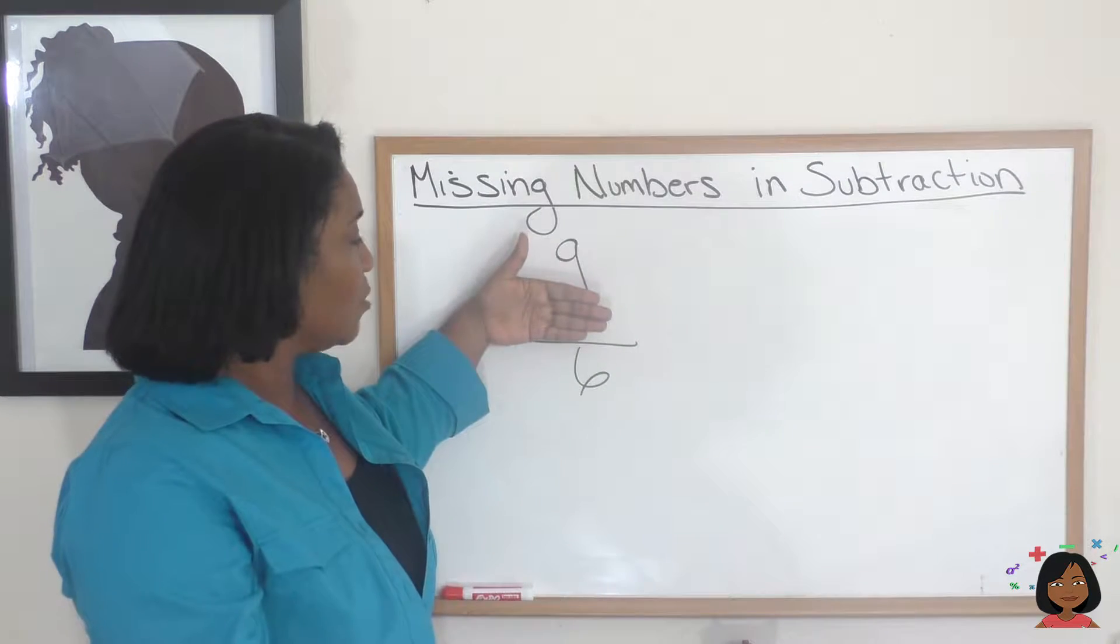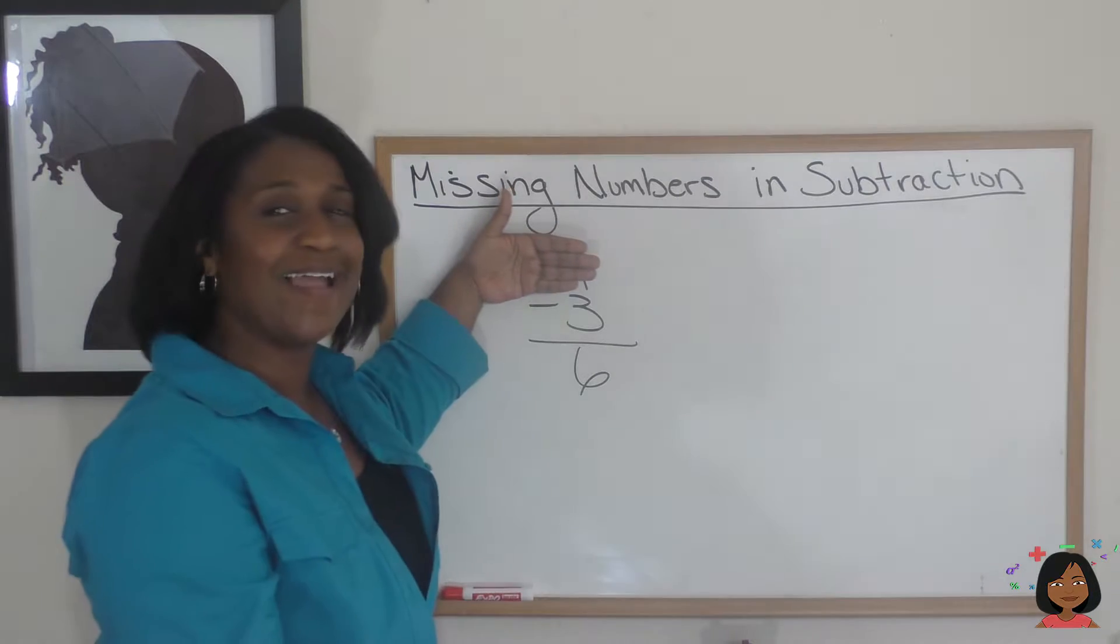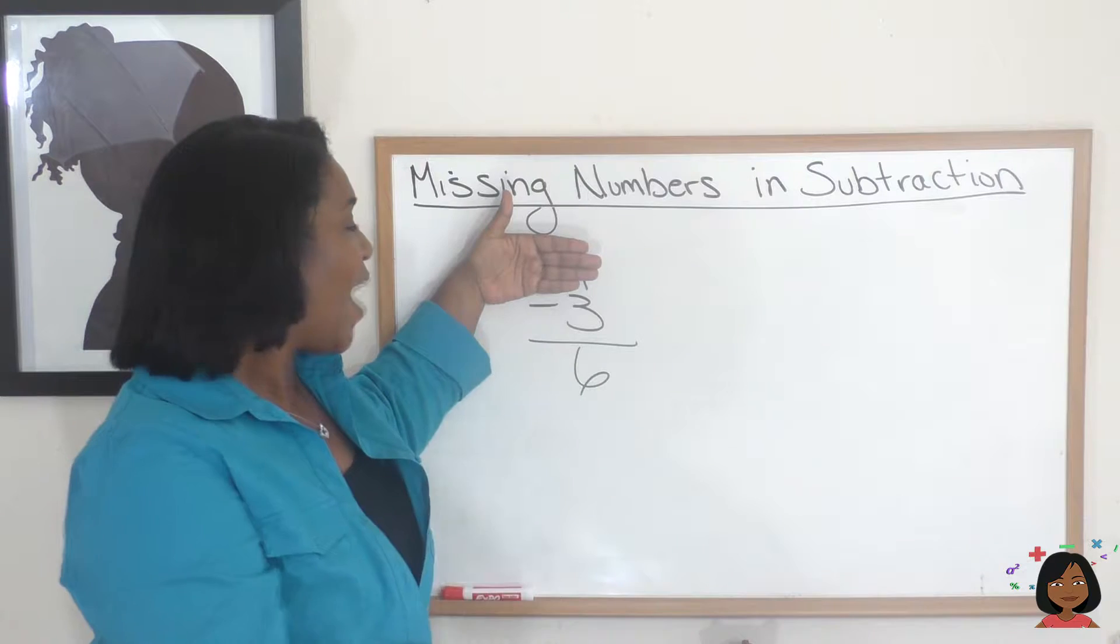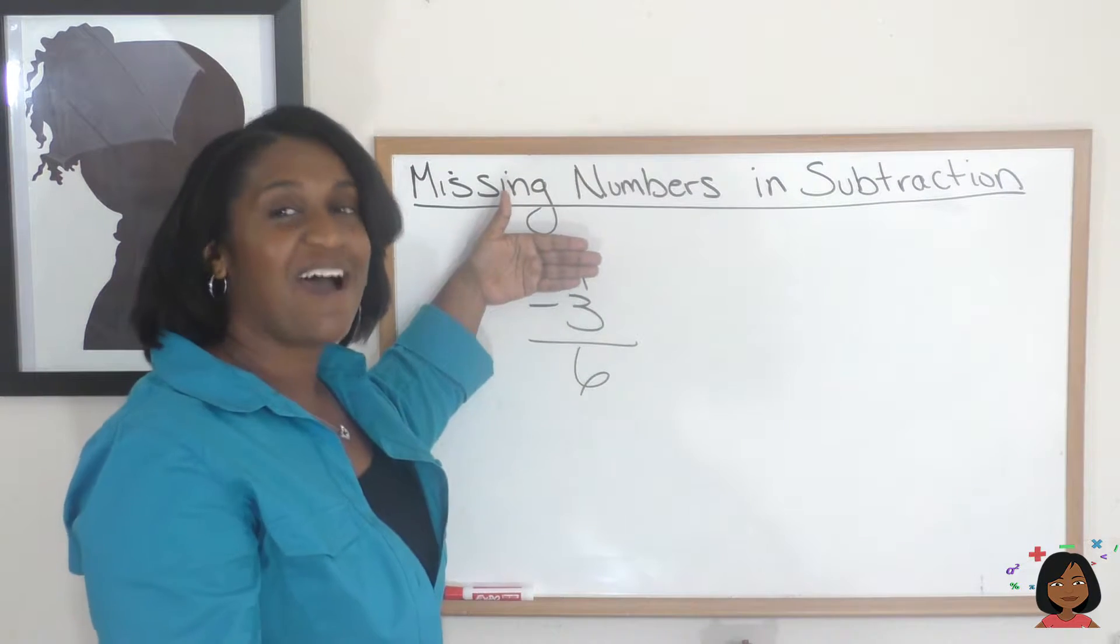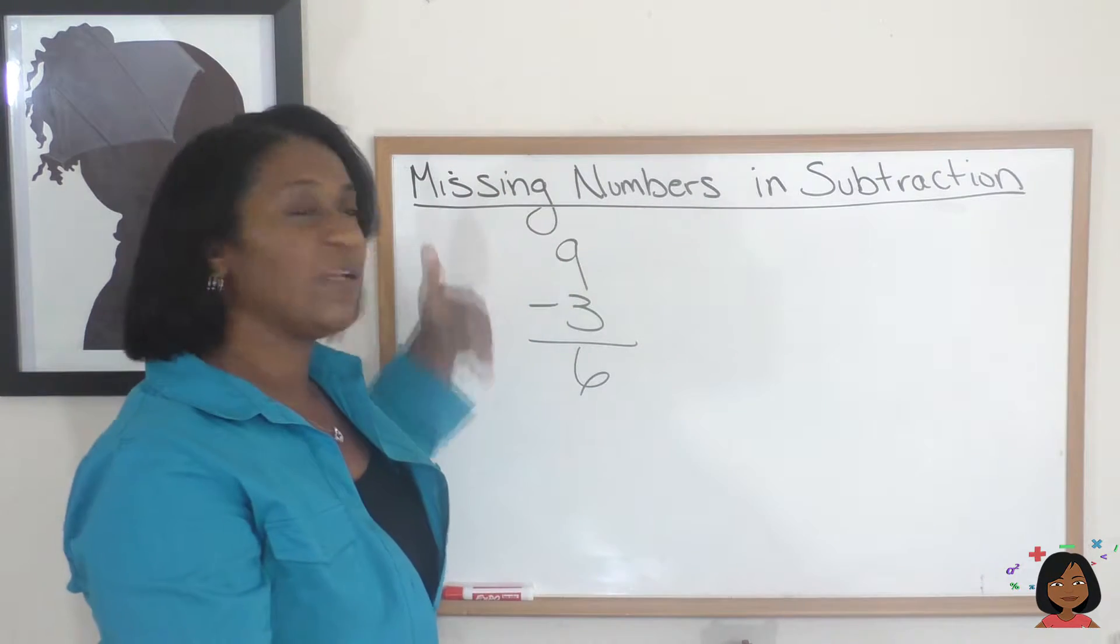But what about if I wanted to cover up the 9 instead, which is, by the way, the minuend. How could I get to 9 with my 3 and my 6? Ah, you see that I could add them. I could add the 6 and the 3, and that would give me 9.